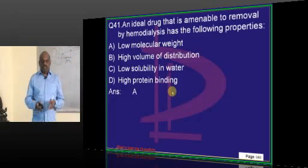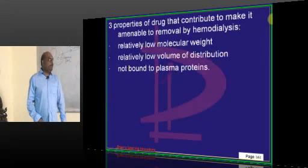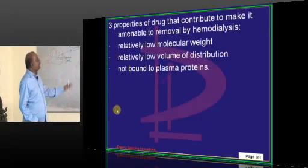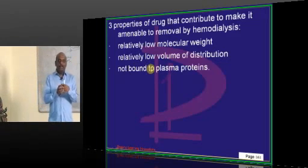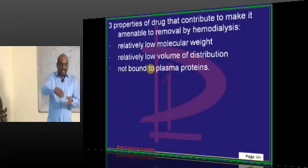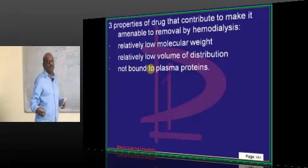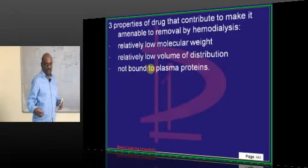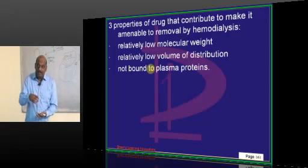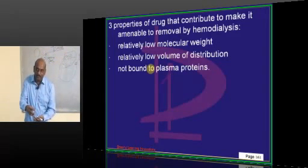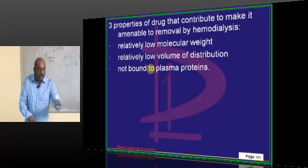The most important property is volume of distribution. If a drug is too protein bound, at the time of dialysis it won't separate from the protein. So it should be present in blood but not very tightly protein bound — then only you can dialyze it easily.